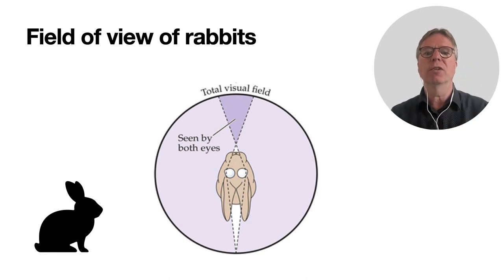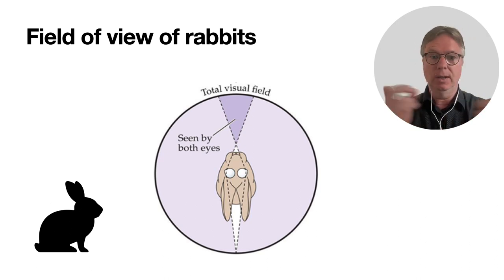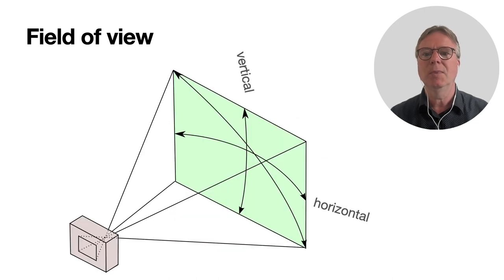There's a small overlap in the visual field of the left and the right eye of the rabbits and they can see some stereo there, but it's big and interesting.